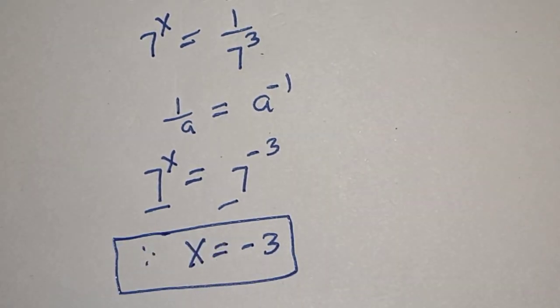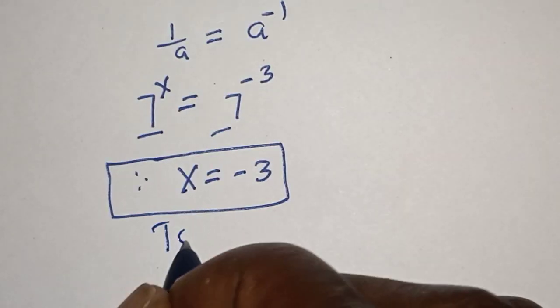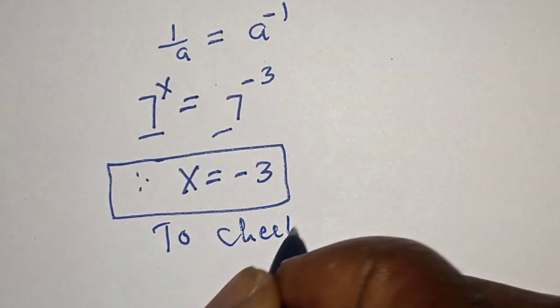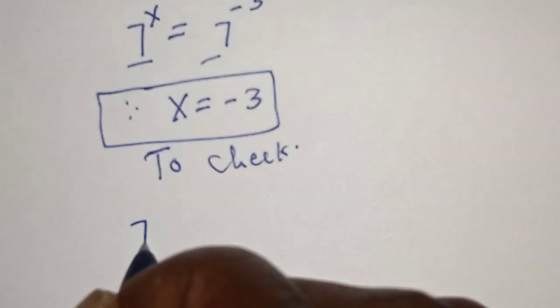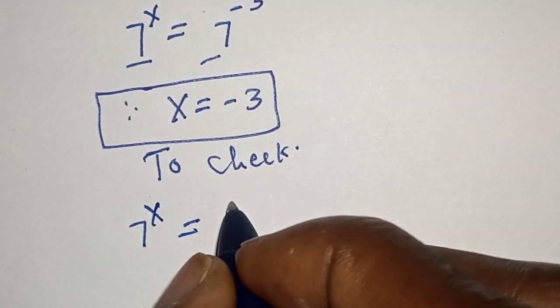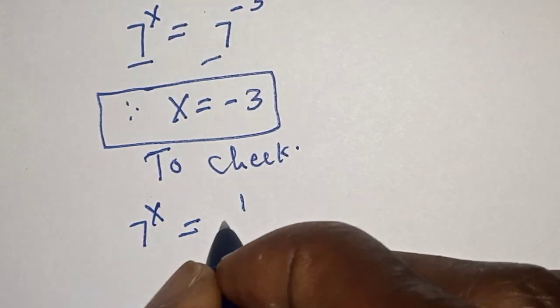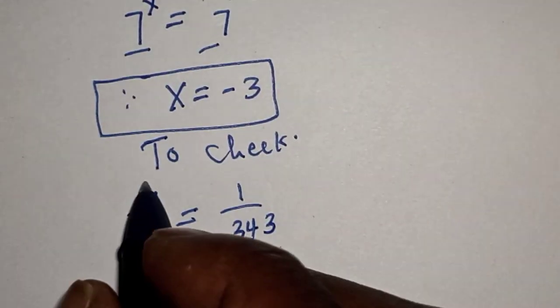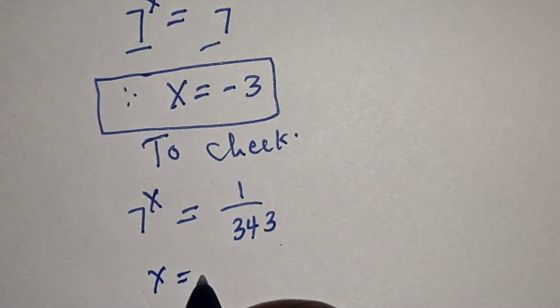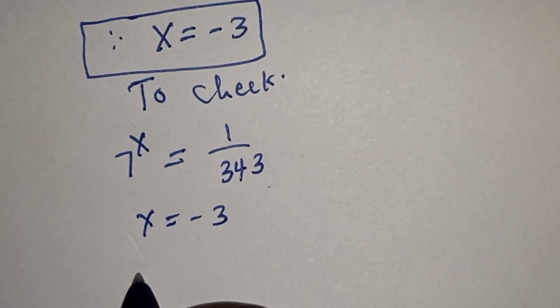We can check to confirm if our answer is right or wrong. To check, then we have 7 raised to power x, it must be equal to 1 over 343. Then x is equal to minus 3.